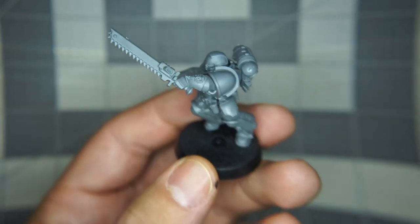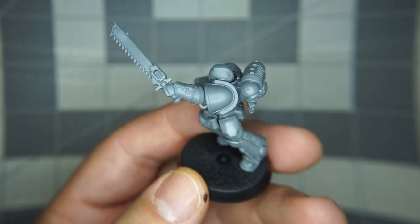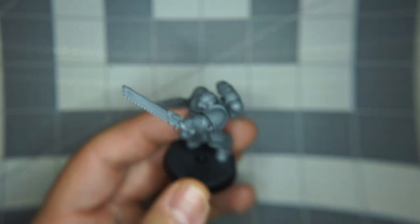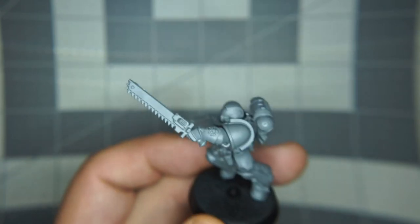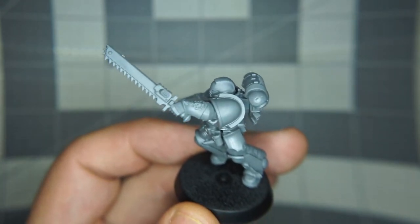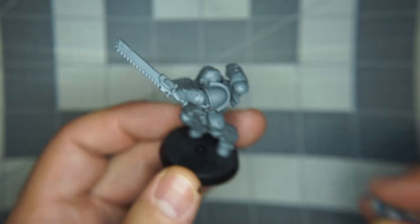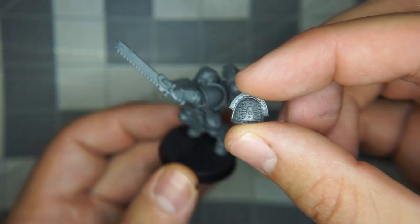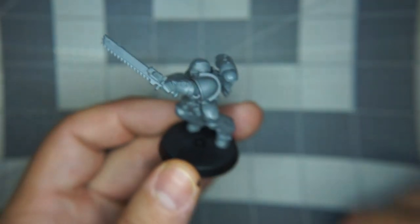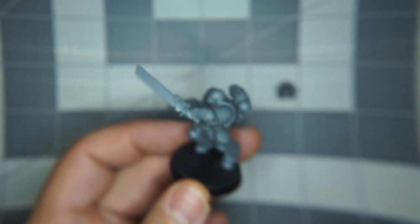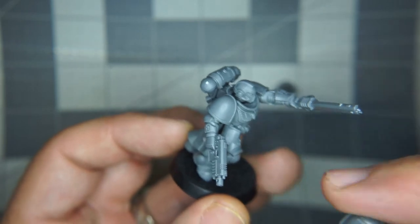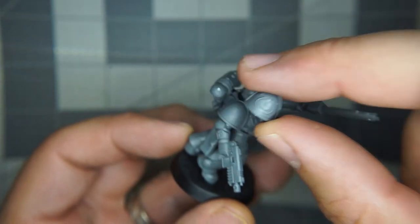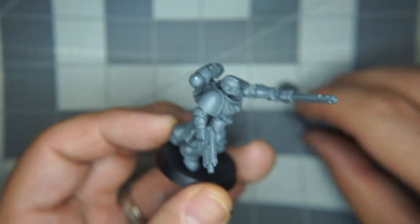Now obviously, that shoulder pad is molded into the arm, so I'm going to have to snip it off. And to do that, I'm going to be using these, snip snip. So I'm going to be putting this guy on there. Next up, we've got the other shoulder pad. It's going to be an ultramarine shoulder pad, so that's going to go there. So that obviously has to get snipped.